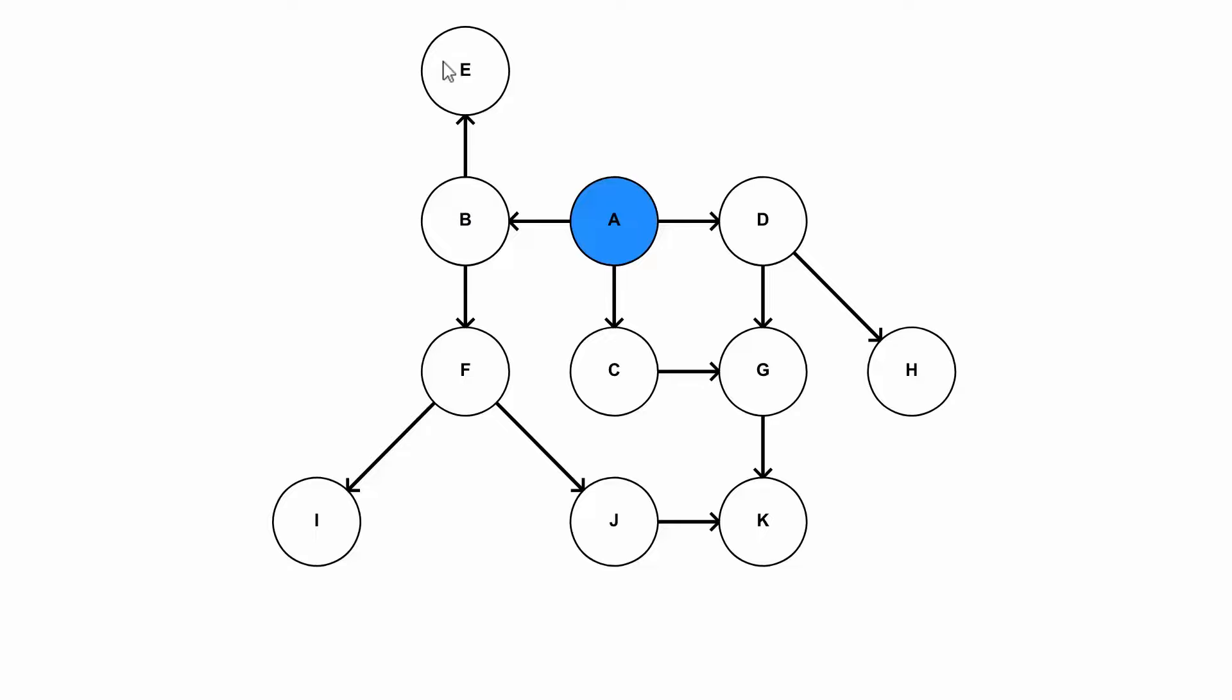And same here with this arrow in order to do E, we must first do B. So we should maybe do A first and then B and then E.